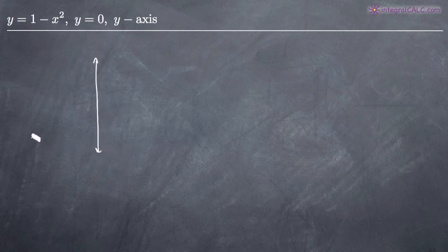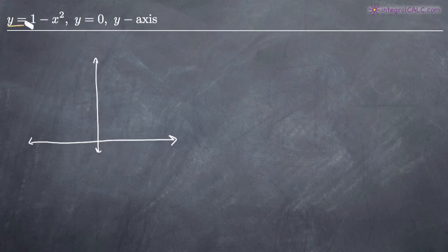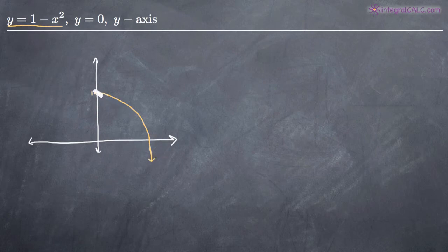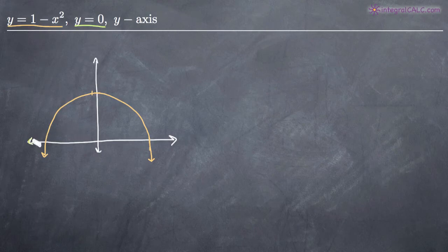Here's our y-axis and here's our x-axis. If we go ahead and draw a picture of these two curves — we'll call this one y equals 1 minus x squared in orange — if we say that this is 1 along the y-axis and this is 1 along the x-axis, a picture of y equals 1 minus x squared would look like an upside-down parabola that points down. Then y equals 0 in green is just right along the x-axis.